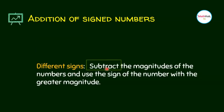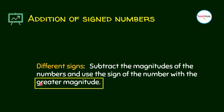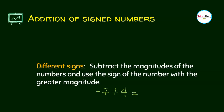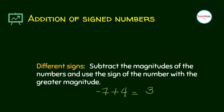What if we have different signs? Instead of adding, we now subtract the magnitudes. And then which sign will win? The number with a greater magnitude will win. For example, I have negative 7 plus 4. I'm adding two numbers with different signs: negative 7 and 4. So I will subtract: 7 minus 4 is 3. Which sign am I going to use? The number with a greater magnitude, which is, in this case, 7. So copy the sign of 7 — that is negative. So the answer is negative 3.